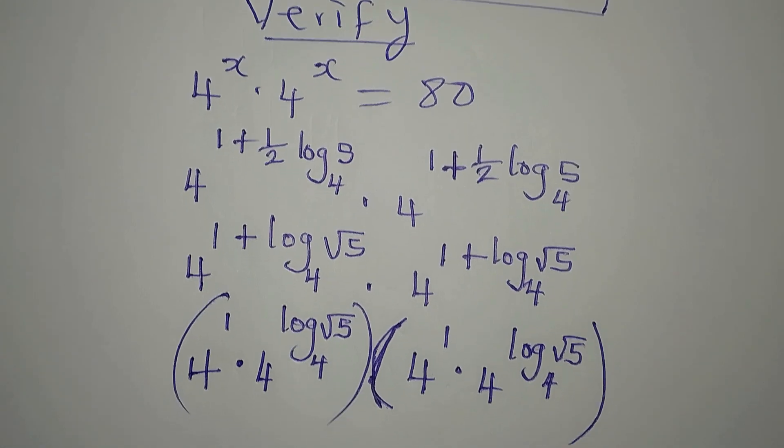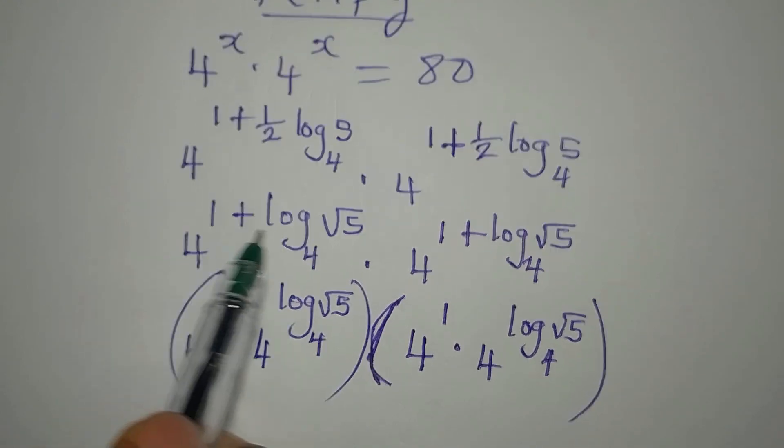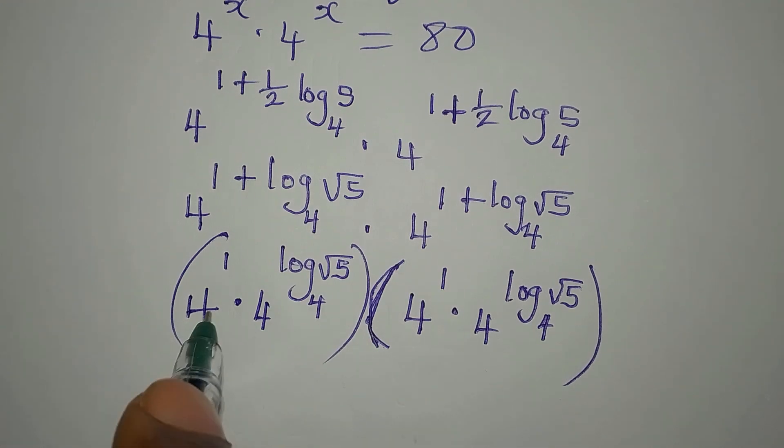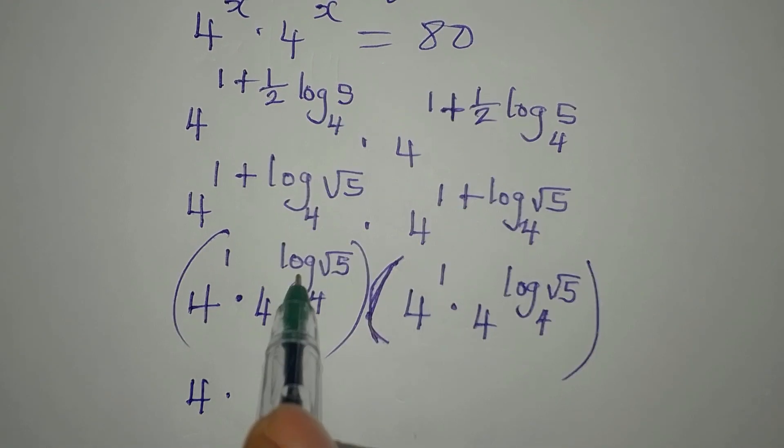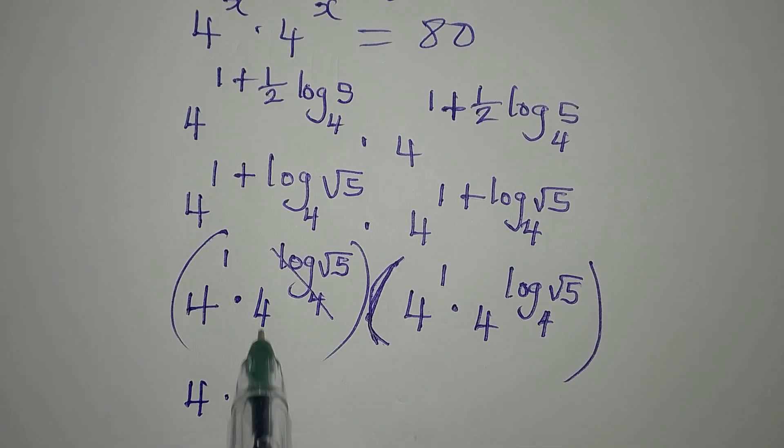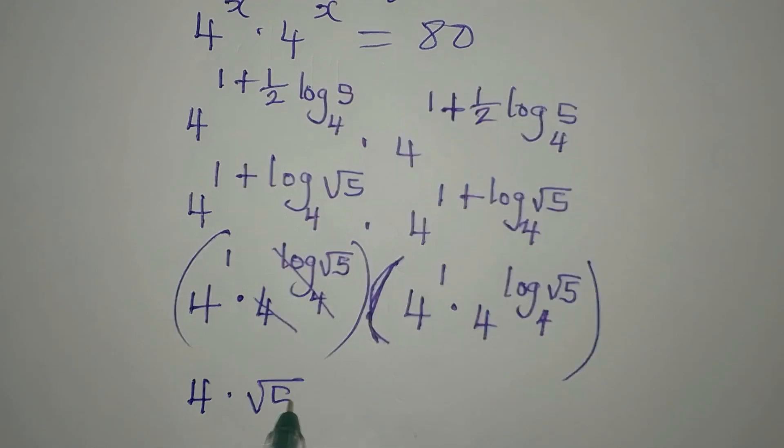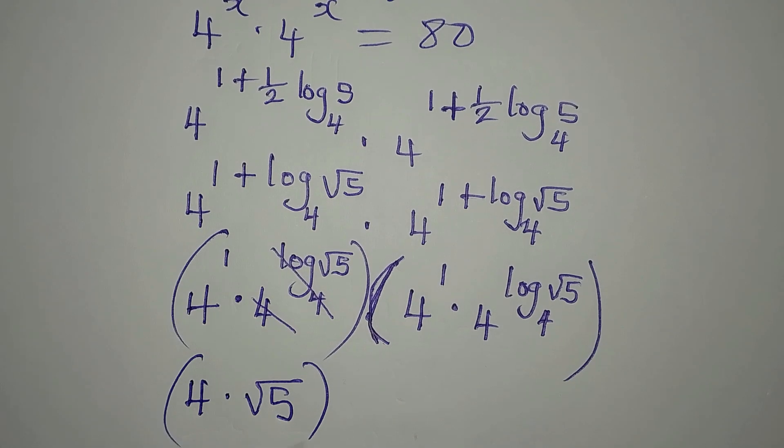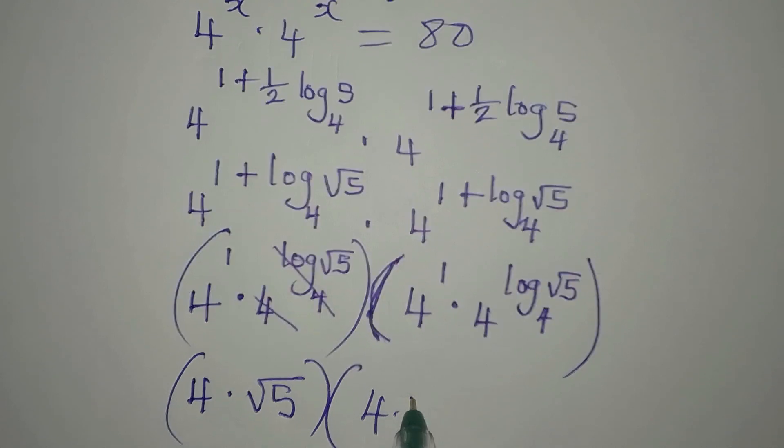Now, 4 to the power of 1 is 4 multiplied by 4 to the power of log root 5 to base 4. So this base 4 and this 4 will go, so we have root 5 to multiply. Now, the same thing will apply here. So we'll have the same 4 multiply by square root of 5.